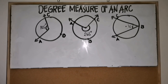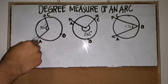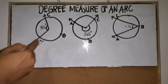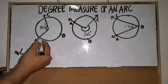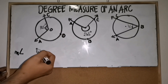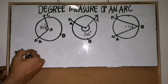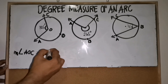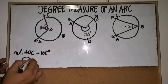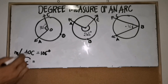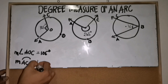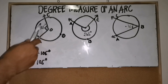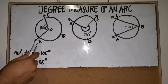Lastly, we'll be solving for the degree measure of an arc. The measure of an arc is equal to the measure of its central angle. So if the measure of central angle AOC is 105 degrees, then the measure of arc AC is also 105 degrees — they are the same. For example, if the measure of central angle AOC is 265 degrees, then the measure of arc ABC is also 265 degrees. The measure of the arc and the central angle are equal.